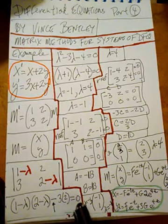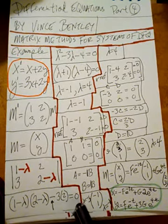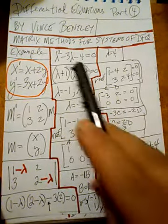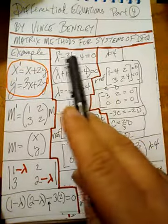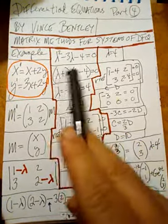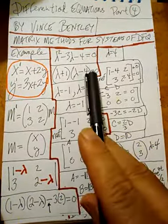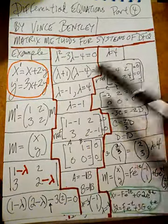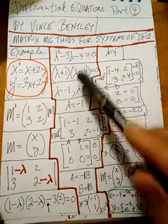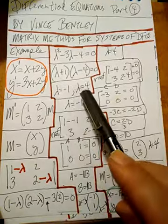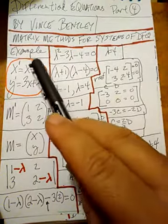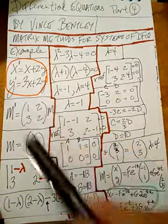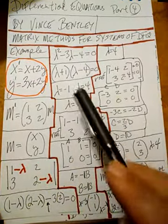We set that equal to zero and solve this algebraic equation. After multiplying it out and factoring, we see the two solutions are negative one and four. These are called the eigenvalues of the system of differential equations.